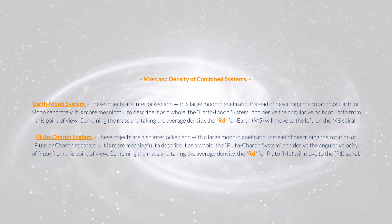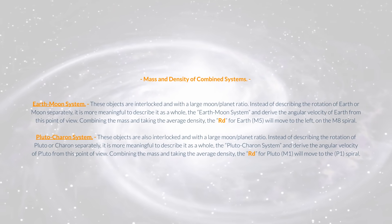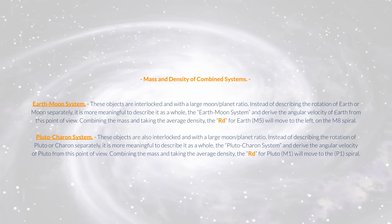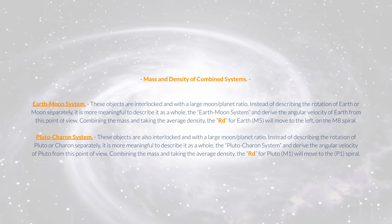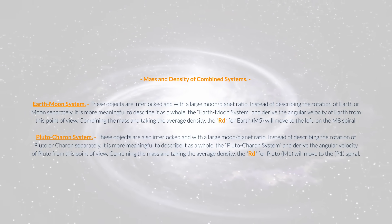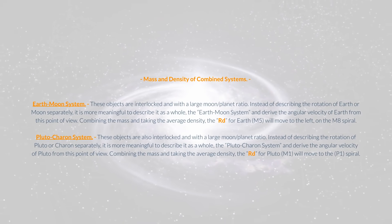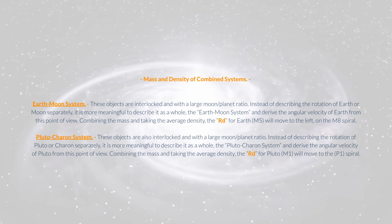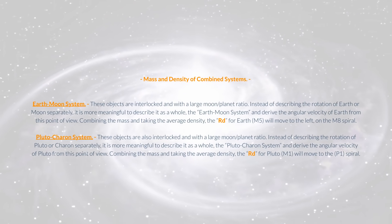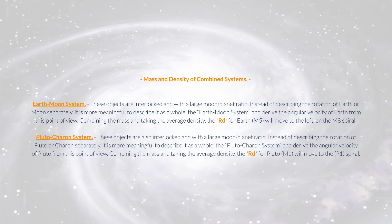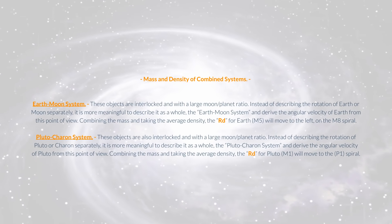Pluto-Charon system. These objects are also interlocked and with a large moon-planet ratio. Instead of describing the rotation of Pluto or Charon separately, it is more meaningful to describe it as a whole, the Pluto-Charon system, and derive the angular velocity of Pluto from this point of view. Combining the mass and taking the average density, the Rd for Pluto, M1, will move to the P1 spiral.